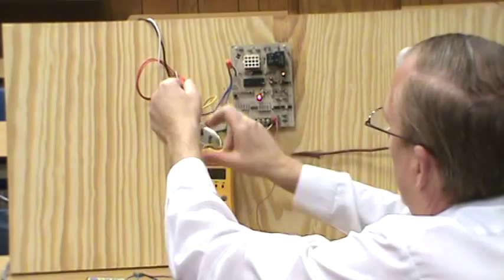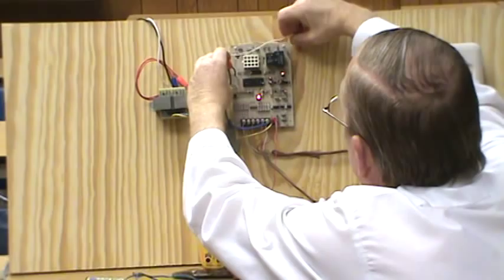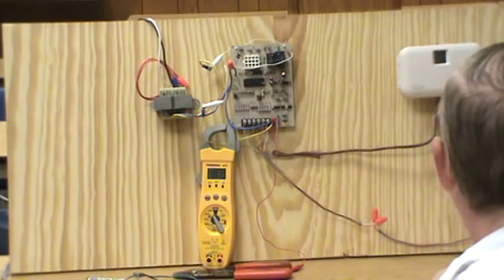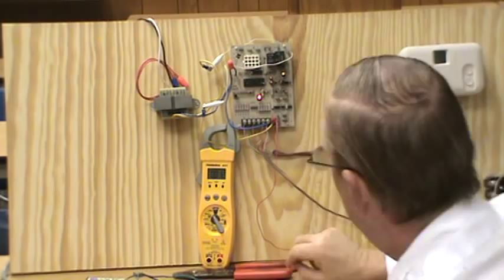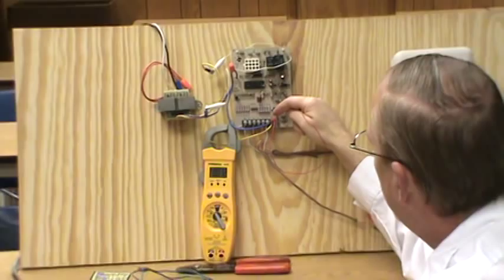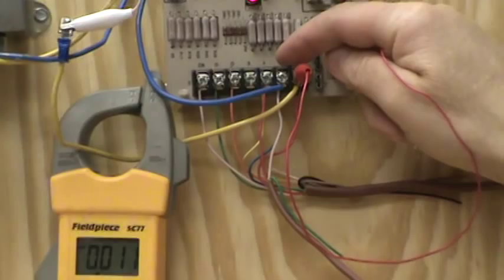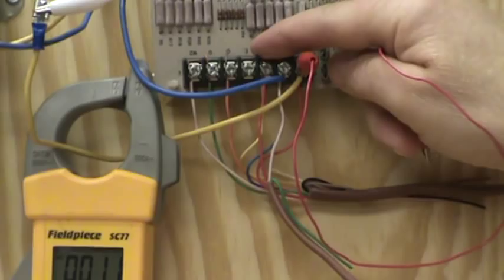And right now I'm going to try to demonstrate like if we had a short. I'm going to put it across the cooling circuit, across the coil of this contact we have off to the right over here. I'll just create a short. And with the jumper lead, what we have over here is our red load side from the secondary of the transformer. The second terminal is common ground, and the third is going to be your cooling circuit. This is the one I'm going to short out.